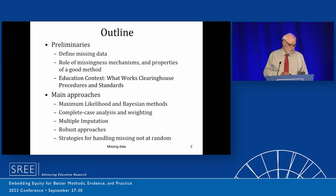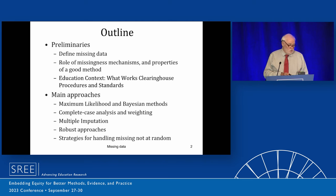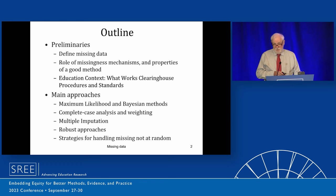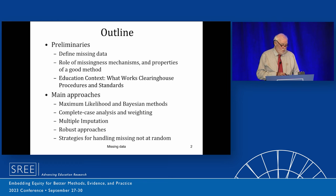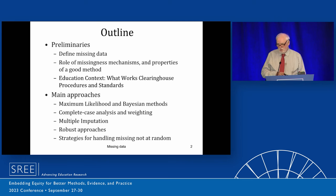First, I'm going to define what missing data means for me — I think it's good to have a definition. I'll talk a bit about missingness mechanisms; Beth mentioned MAR and MCAR, I'll say a little bit about that. Then what makes a good missing data method. I'll use the What Works Clearinghouse as a backdrop and make a few comments about their approach. Then I'm going to talk about main approaches: maximum likelihood, Bayesian methods, complete case analysis, weighting the complete cases, multiple imputation, and robust approaches. And then how to deal with the thorny issue of missing not at random.